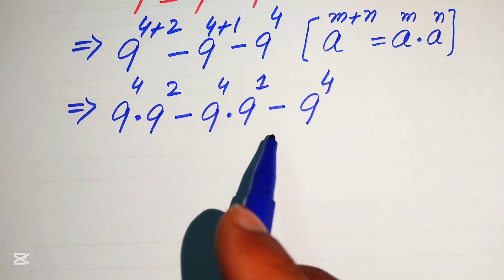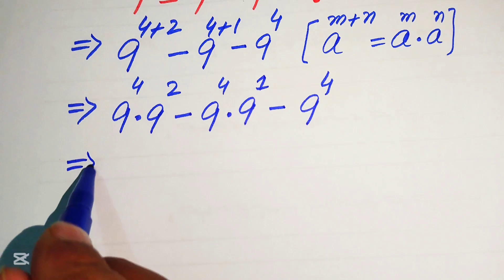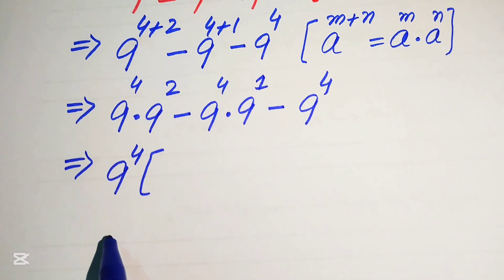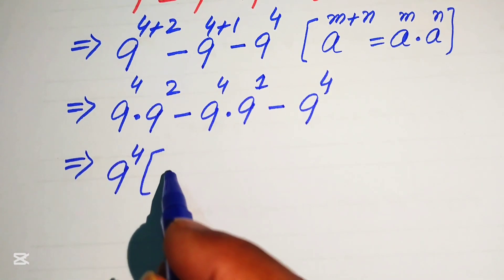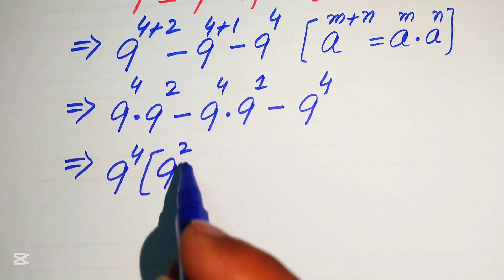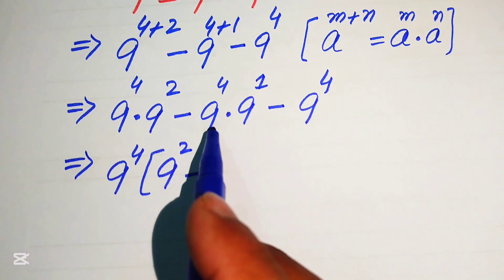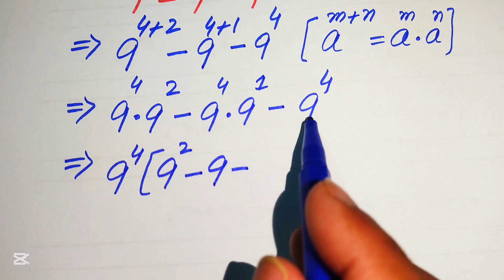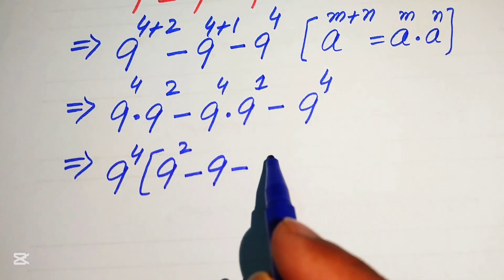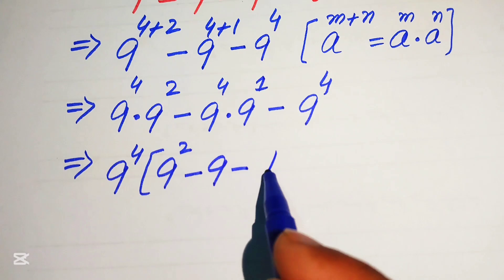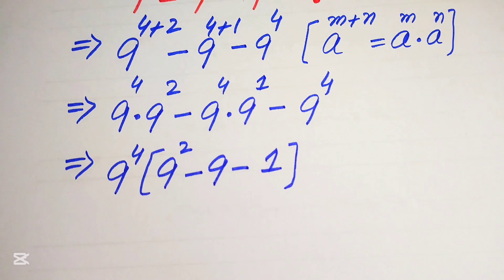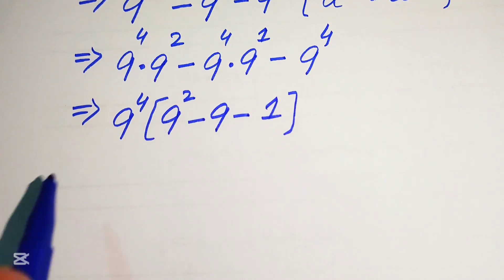Each of these terms involves 9 to the power of 4, so we take 9 to the power of 4 as a common factor. The remaining terms are: 9 squared, minus 9 (when we take out 9 to the power of 4 from the second term), minus 1 (when we take out 9 to the power of 4 from the third term).